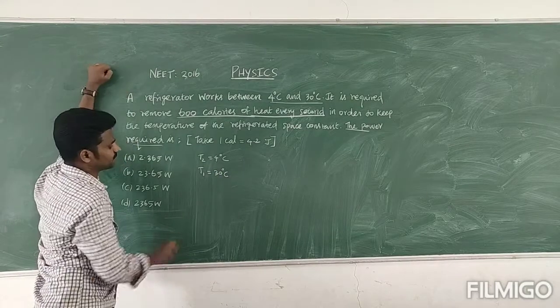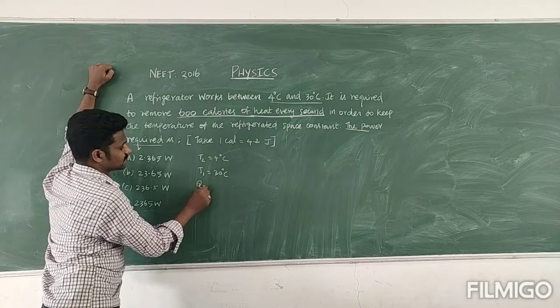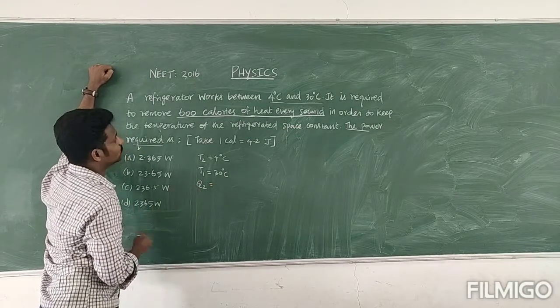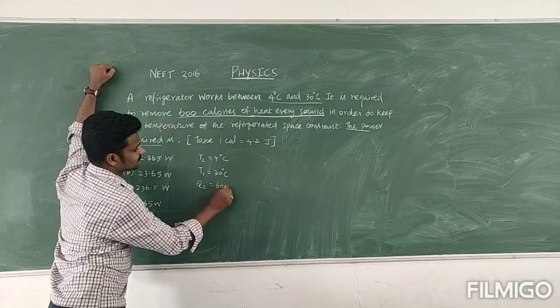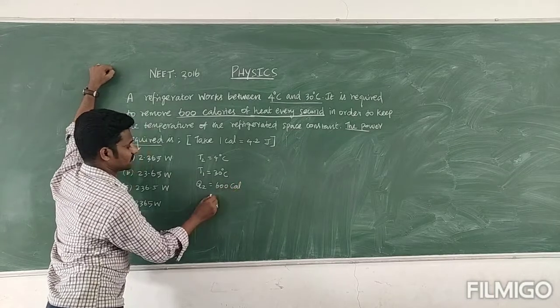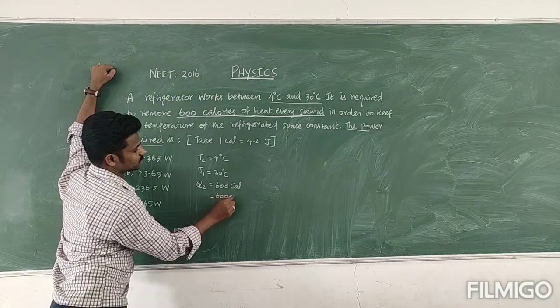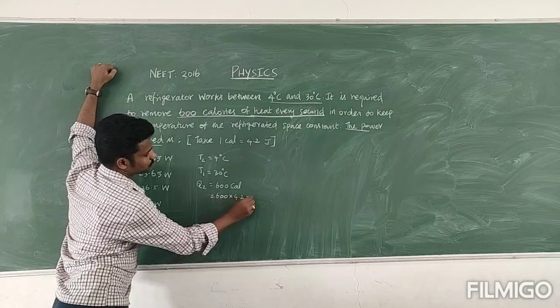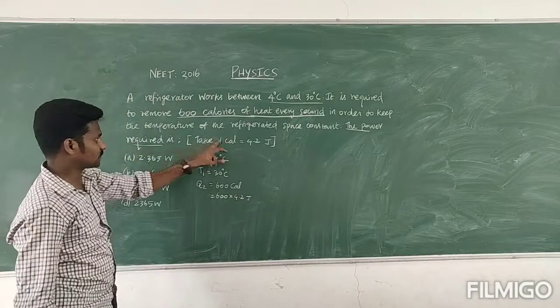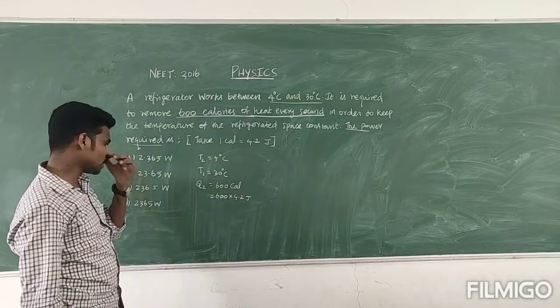The removal of heat is given, that is the return of heat, that is Q2. So Q2 is given, 600 calories. So we can write 600 calories as 600 into 4.2 joules, because you know 1 calorie is equal to 4.2 joules.